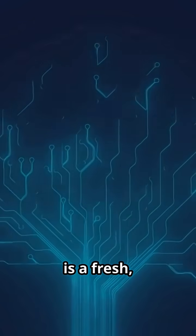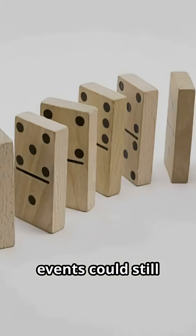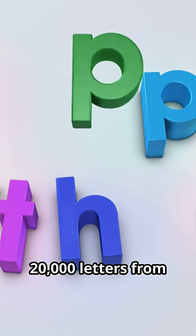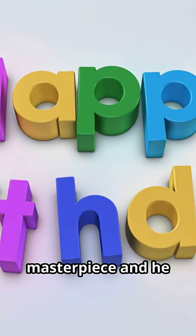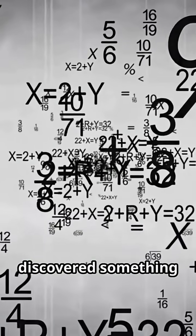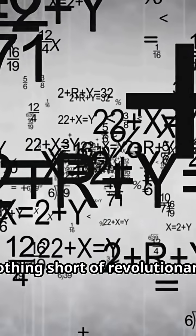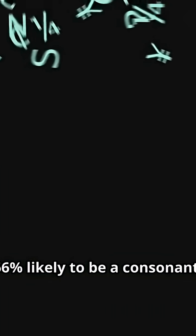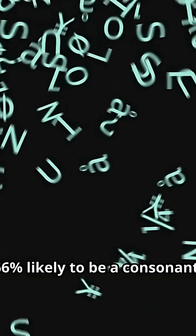Markov was furious. He set out to destroy this argument by proving that dependent events could still follow mathematical laws. His weapon: Russian poetry. Markov analyzed 20,000 letters from Pushkin's masterpiece and he discovered something revolutionary. If the previous letter was a vowel, the next letter was 66% likely to be a consonant. The past was influencing the future.